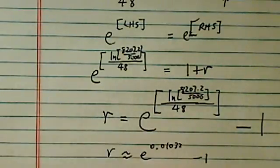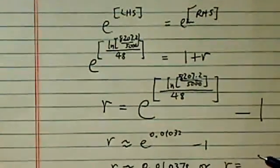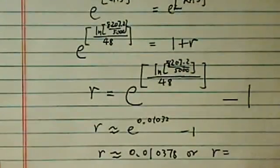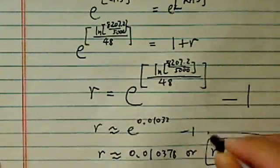minus 1. So R is roughly equal to 0.01378, or basically R is equal to 1.04%. Here's the answer.